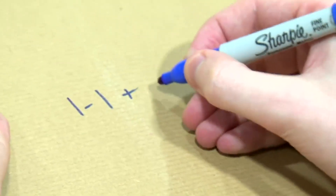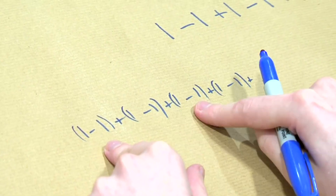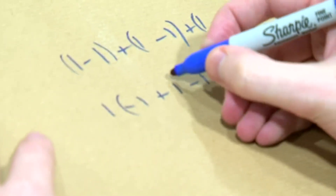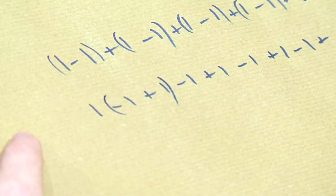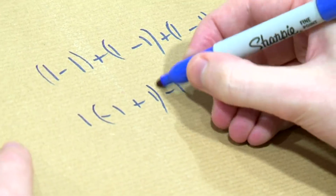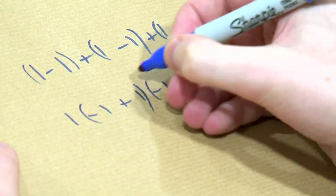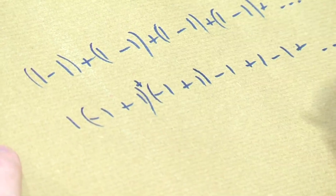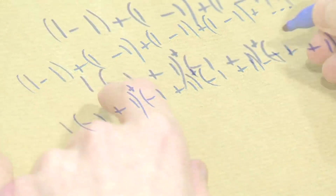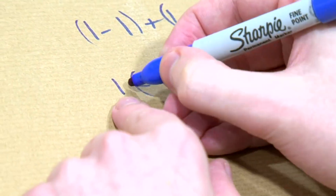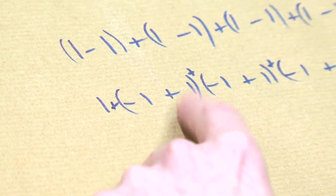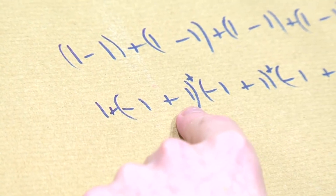Well, we can regroup: plus zero, plus zero, then add one and subtract one, then add one and subtract one, then add one and subtract one, then add one and subtract one. Then I'm going to add one again, then add one and subtract one.